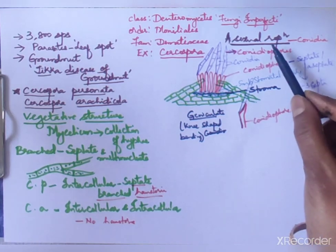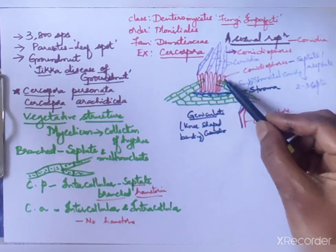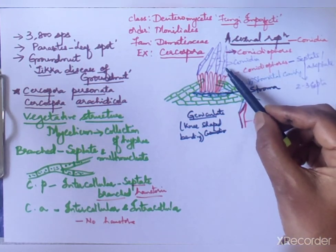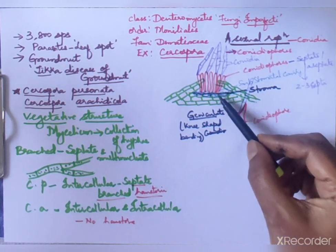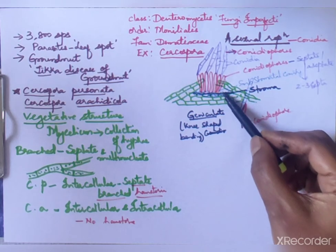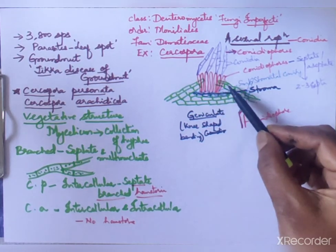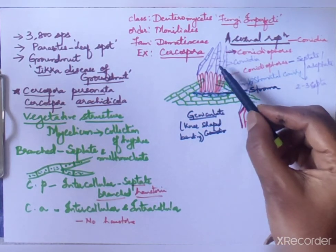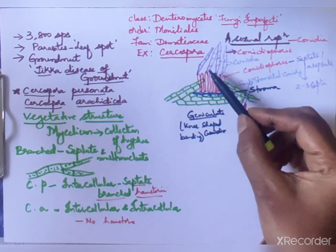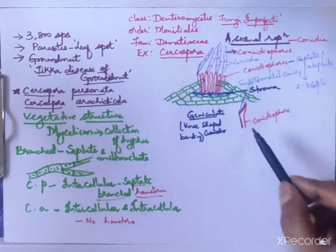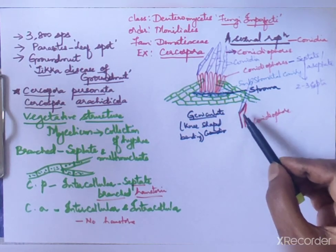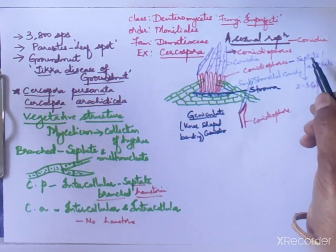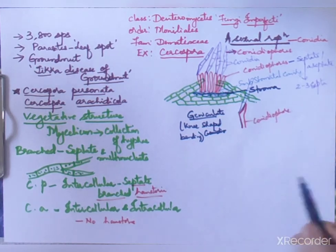Asexual reproduction takes place with the help of conidia, which are borne on conidiophores. The conidiophores may be septate or aseptate. They arise from the stroma in the sub-stomatal cavity and emerge rupturing the epidermis to be exposed to the atmosphere. When conidia are detached, scars cause the geniculate knee-shaped bending. On germination, each conidium gives rise to a new mycelium.